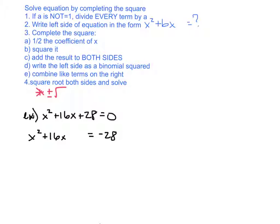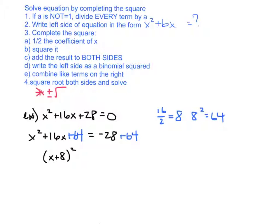Leave a space after 16x on both sides of the equation. The 28 is negative because it moved over the equals sign. Now let's complete the square: off to the side, I take half the coefficient of x. The coefficient is 16, so half is 8. Then I square that — 8 squared is 64 — and add 64 to both sides. The two numbers that multiply to 64 and add to 16 are 8 and 8, so I can rewrite the left side as x plus 8 squared equals 36.